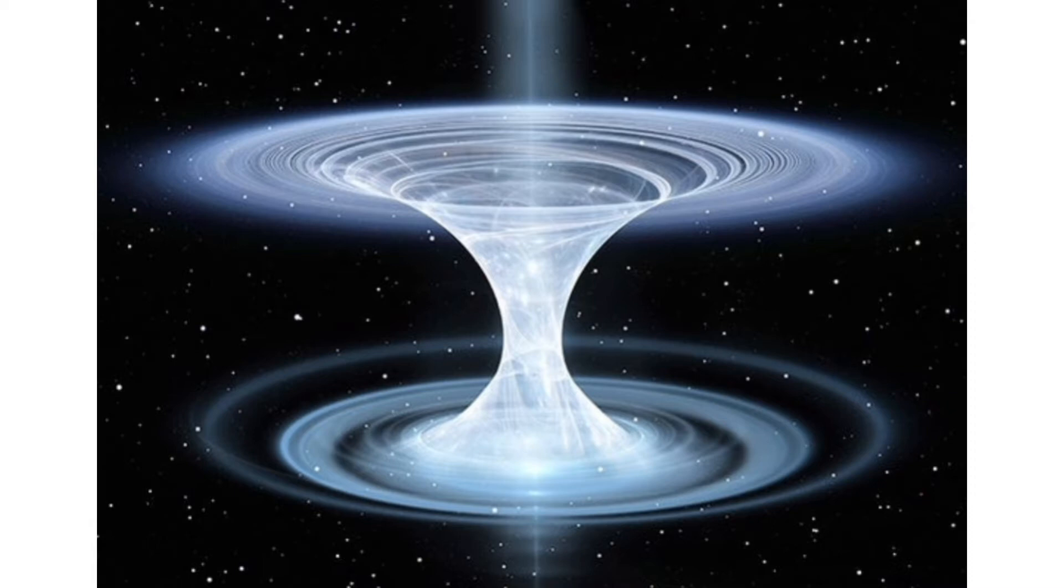Light travels through space-time along a geodesic, the shortest possible path between two points on a curved surface. In places where space-time is flat, the geodesic is a straight line.